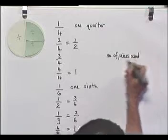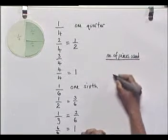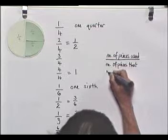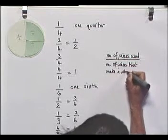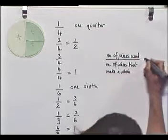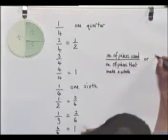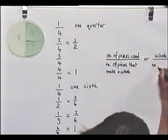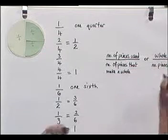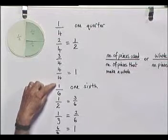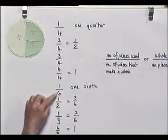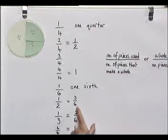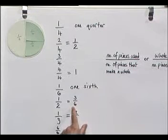So fractions — we can look at them in two ways. We can look at it as the number of pieces that we've used, divided by the number of pieces that make a whole. Or as the whole divided by the number of pieces, or number of people, that we've divided it into. Here we have a whole bar divided into six pieces; here we have the number of pieces that we've taken, divided by the number of pieces that make up the whole bar.